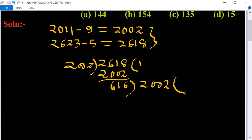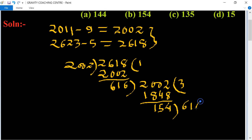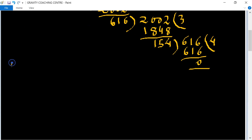The table of three: 3 times 616 equals 1848, and 4 times 616 equals 2464. We take 154 times 4 equals 616, so the remainder is zero. Therefore, HCF equals 154.